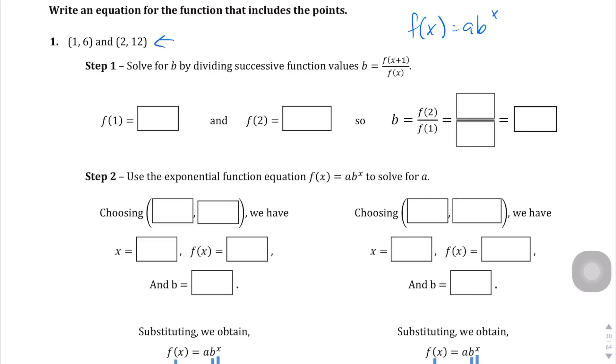So in question one, we have these two points, 1, 6 and 2, 12. And so the first thing we're going to do is find b, which is this number here. And the way we do it is we're going to divide the second term from the first term, kind of like finding the common ratio. But in this case, it's a function of 1 and a function of 2. So we're going to divide the function of 2 divided by the function of 1. And so let's go ahead and do that.